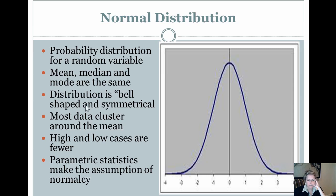The distribution is bell shaped, should be a quote right there. So it looks like a bell and it's symmetrical, meaning this side of the line looks the same as this side of the line. Most data cluster around the mean versus being way out or way up here, way down here.